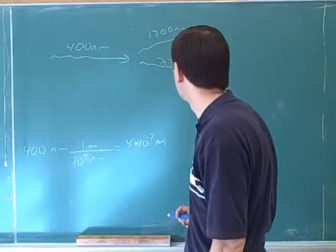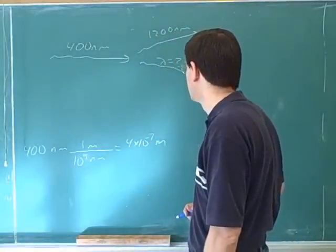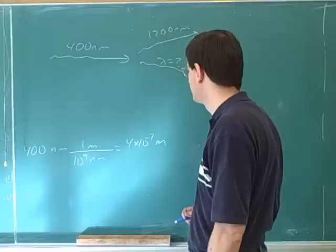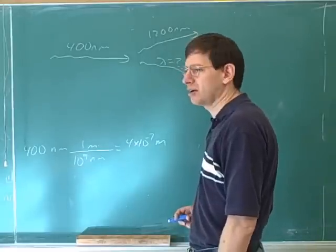That gives us 4 times 10 to the negative 7. Good, that's a good first step. And then you convert this to a frequency. Let's do that.